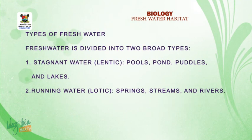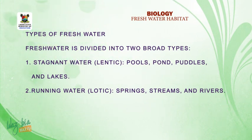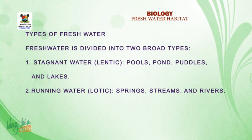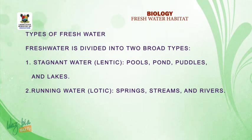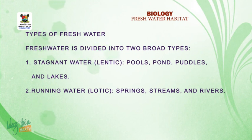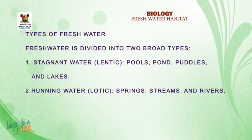Types of freshwater: we have stagnant water, which is known as lentic. Examples include pools, ponds, puddles, and lakes. The second type is running water, which can also be called lotic water. Examples are springs, streams, and rivers.